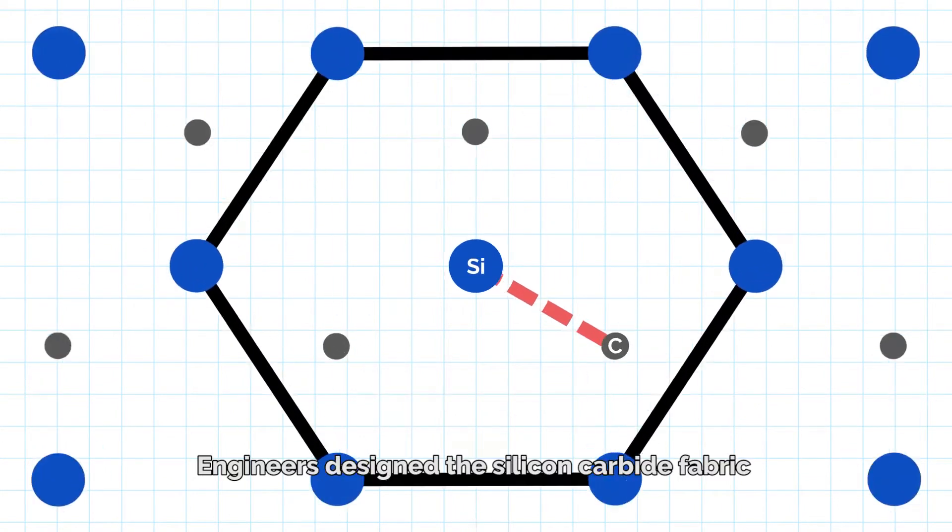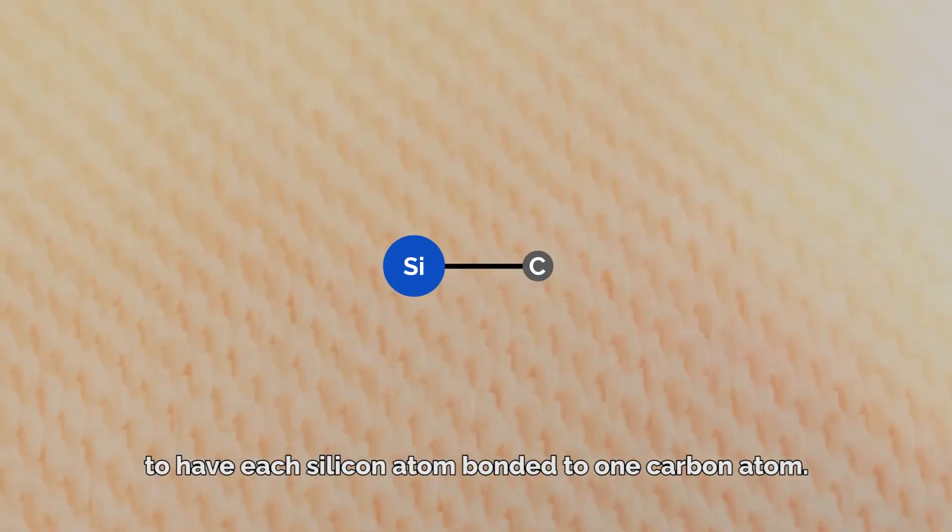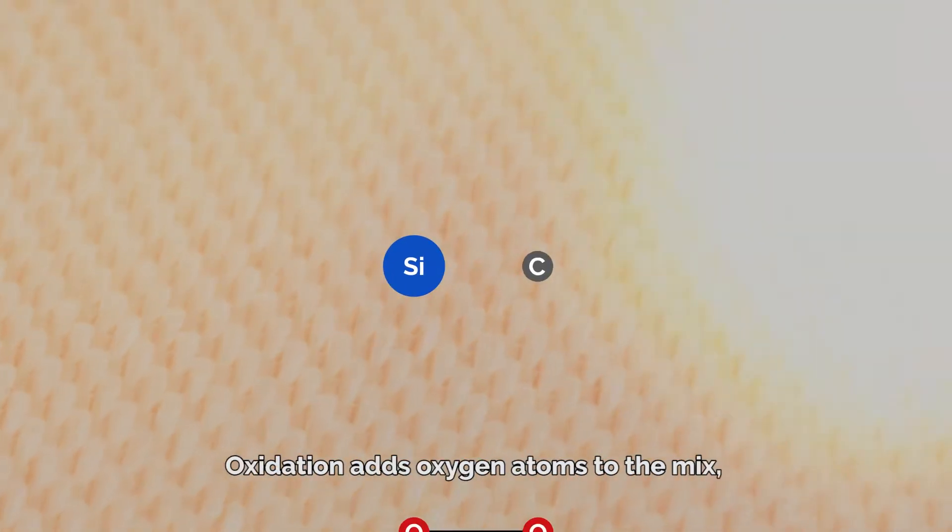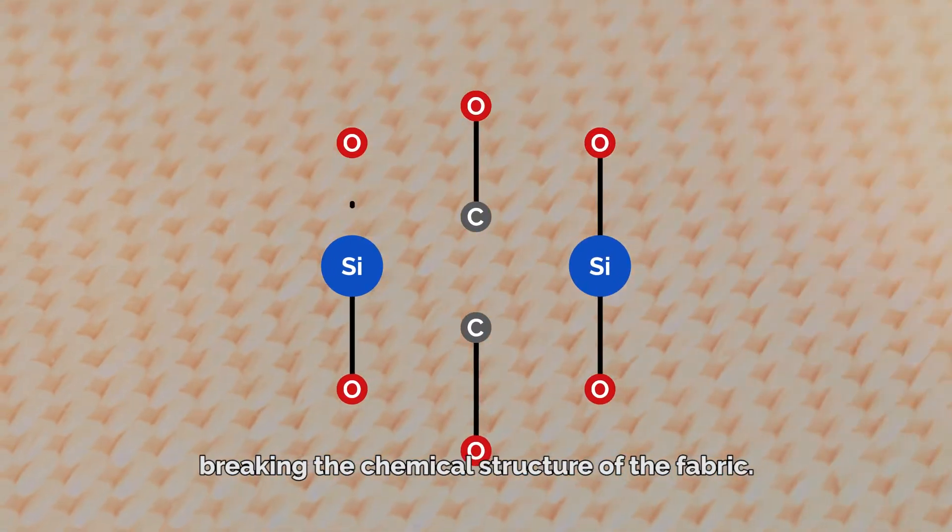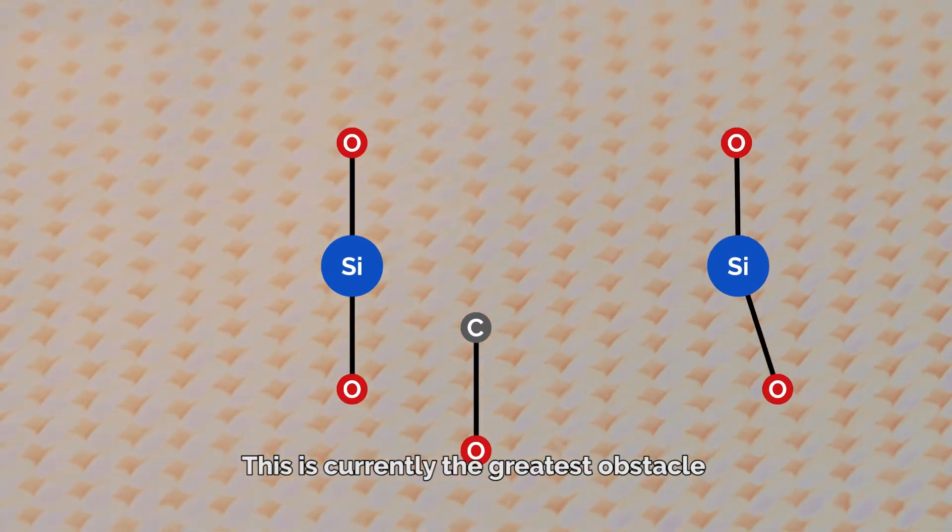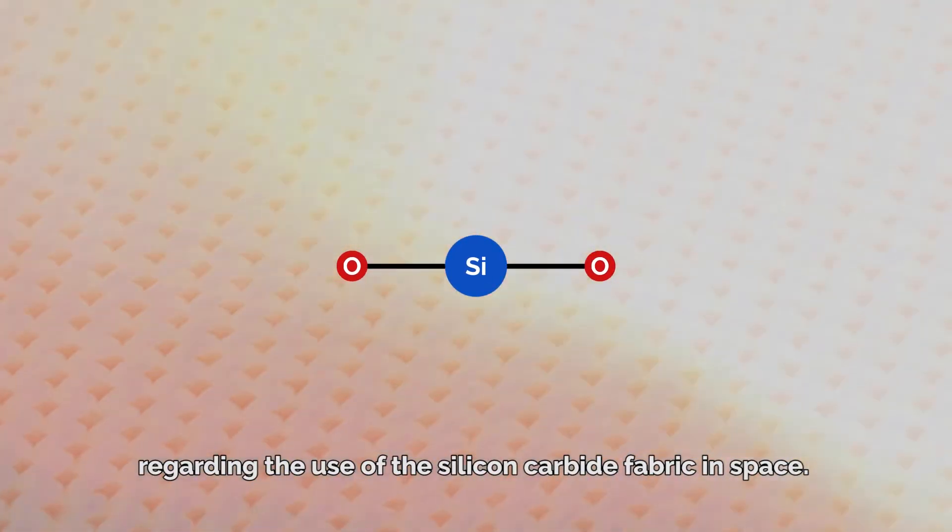Engineers designed the silicon carbide fabric to have each silicon atom bonded to one carbon atom. Oxidation adds oxygen atoms to the mix, breaking the chemical structure of the fabric. This is currently the greatest obstacle regarding the use of the silicon carbide fabric in space.